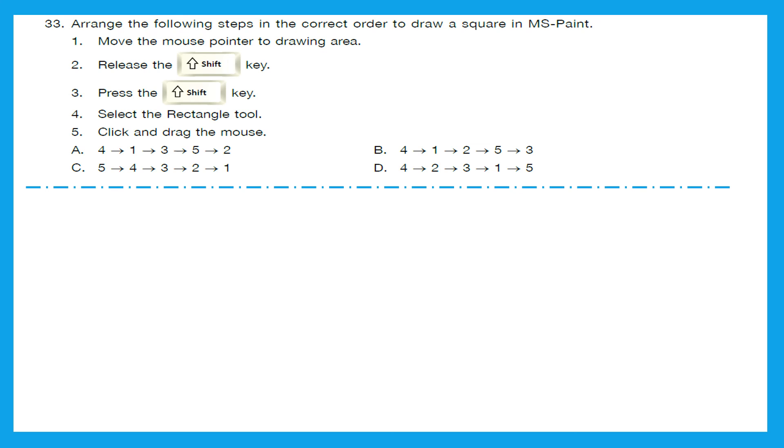Question 33: Arrange the following steps in the correct order to draw a square in MS Paint. Move the mouse pointer to drawing area. Release the shift key. Press the shift key. Select the rectangle tool. And click and drag the mouse. Now, let's start. What is the first thing which we are going to do? So, we first of all will select the rectangle tool. Right? And then we are going to move the mouse pointer to drawing area. Correct? And then we will press the shift key. Then what we will do? We will click and drag the mouse. And then we will release the shift key. This should be the right sequence to draw a square in MS Paint. So, option A is the right answer: 4, 1, 3, 5, 2.